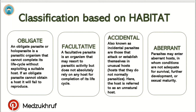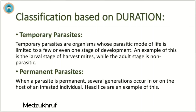Aberrant parasites are those parasites that enter aberrant hosts in which conditions are not adequate for survival, further development, or sexual maturity of the parasitic organism. Classification of parasites based on duration: Temporary parasites are organisms whose parasitic mode of life is limited to a few or even one stage of development. An example of this is the larval stage of harvest mites, while the adult stage is non-parasitic.